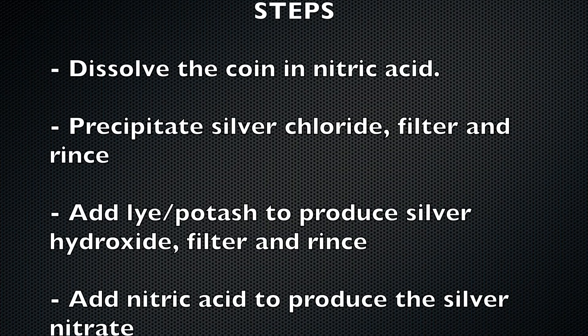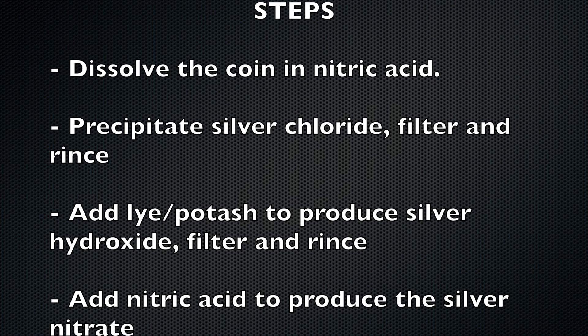The first step is to dissolve the coin in nitric acid. Next, we precipitate the insoluble silver chloride by adding table salt. Then, we add a base to produce silver hydroxide. Eventually, silver nitrate will be produced by the action of nitric acid.